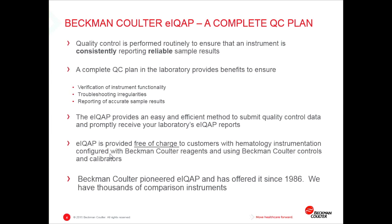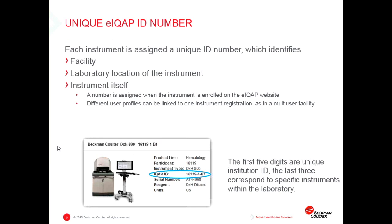You can even use your mobile phone now. To get into the specifics of how the iKoIP works: each instrument is assigned a unique number which identifies the facility, the location of the instrument in the facility, and the instrument itself. A number is assigned when the instrument is enrolled on the eIQAP website. A key point is that different user profiles can be linked to one instrument registration — for example, different supervisors in different shifts could upload data for one instrument, each with their own personal login tied to an instrument profile. The first five digits are a unique ID for the institution, and the last three digits correspond specifically to the instruments within a laboratory.